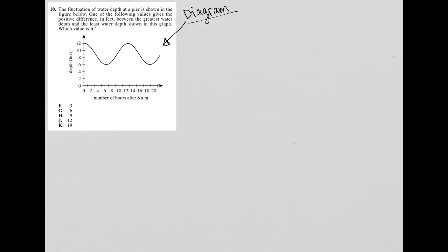So let's read the question and see how we're going to use this graph to answer the question. The question says the fluctuation of water depth at a pier is shown in the figure below. Well, how is it shown? So let's take a look at this graph.